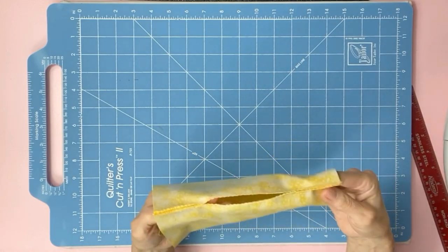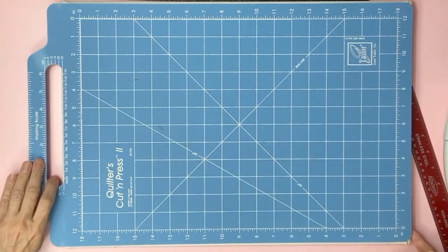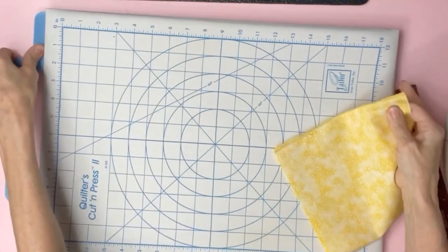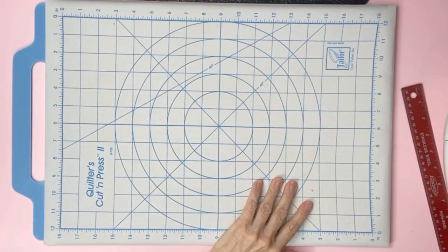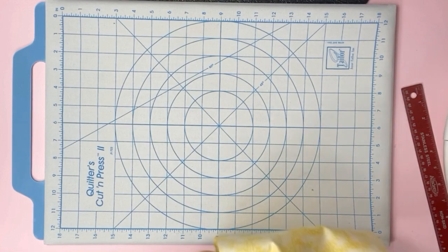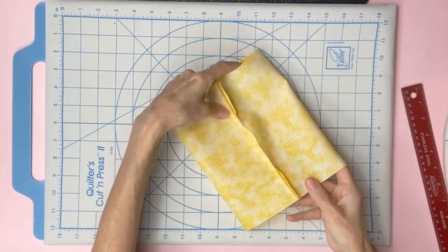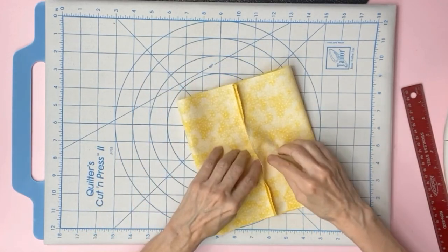Now we'll iron it. I'm going to flip over my board. One side is for cutting and the other side is for pressing. If you're interested in this quilter cutting press, I'll list it down below in the description as well as all the other items I show in this video.